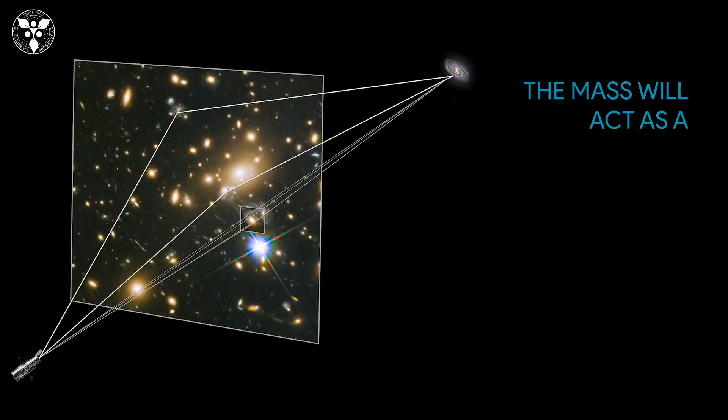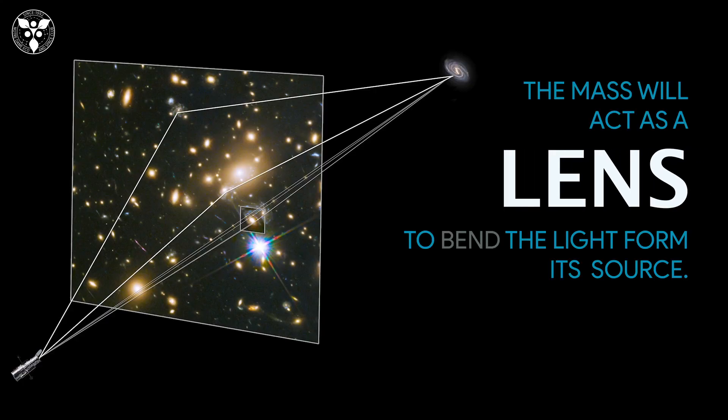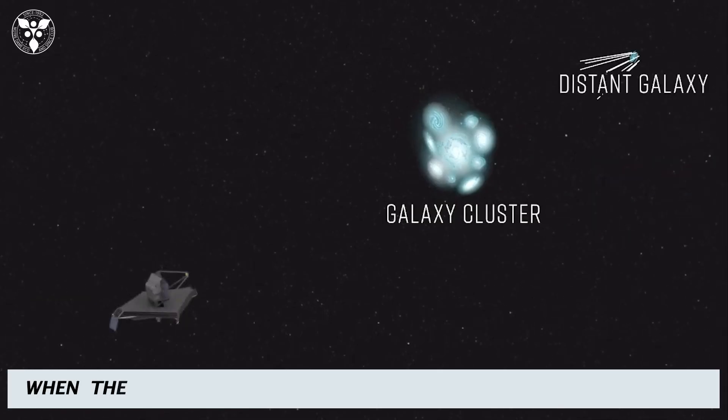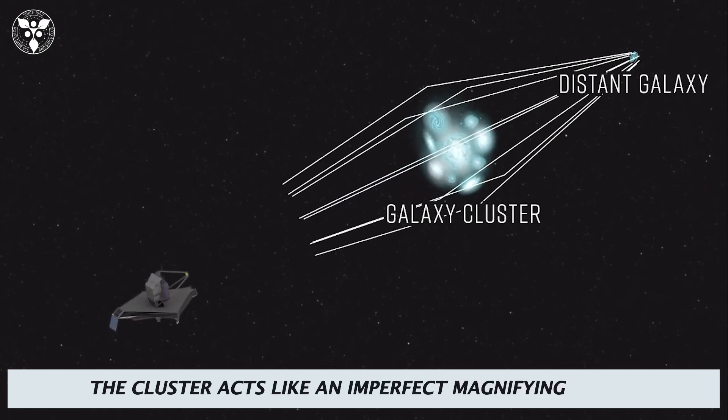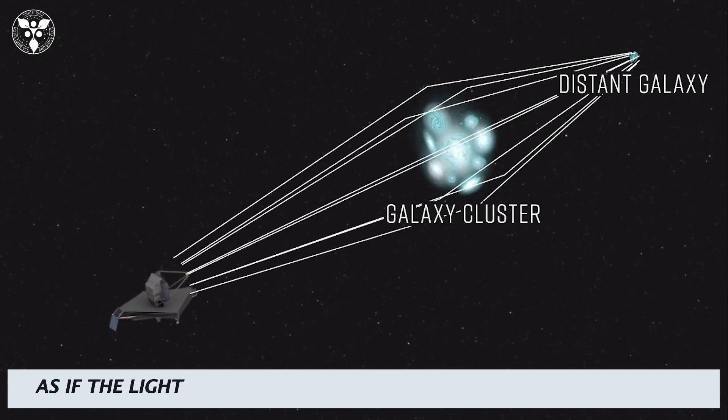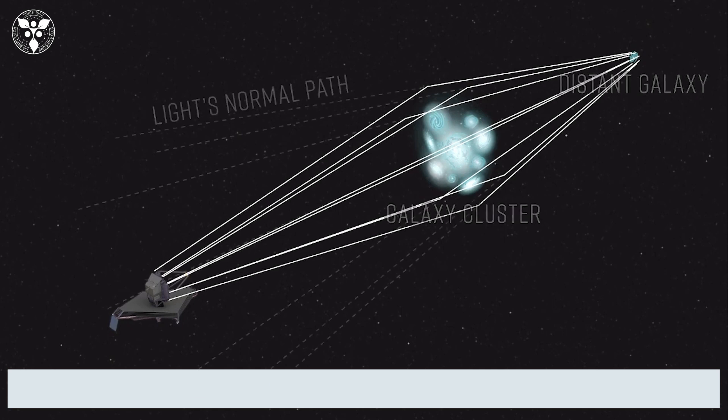This mass will act as a lens to bend the light from its source. The more massive an object, the more lensing is absorbed. When the light from a distant galaxy passes through a cluster, the cluster acts like an imperfect magnifying glass, as if the lights would have gone in other directions but they get bent towards our telescope.